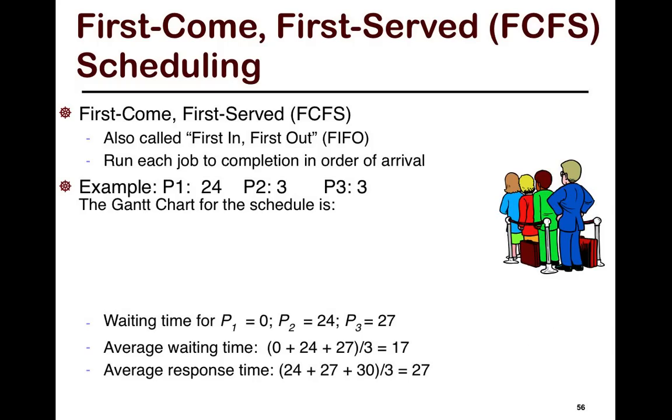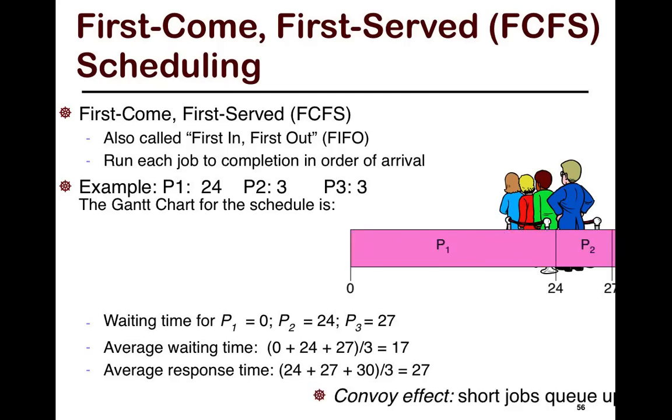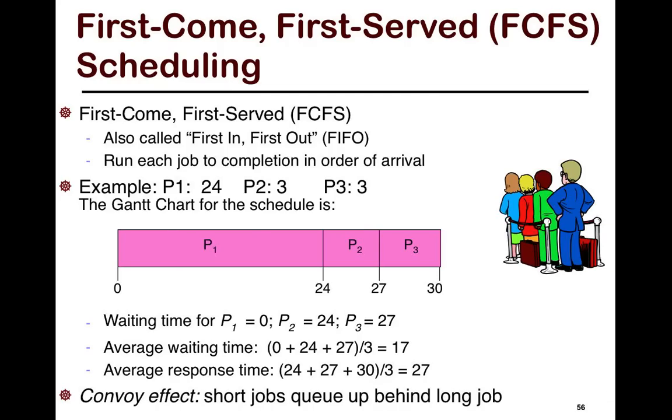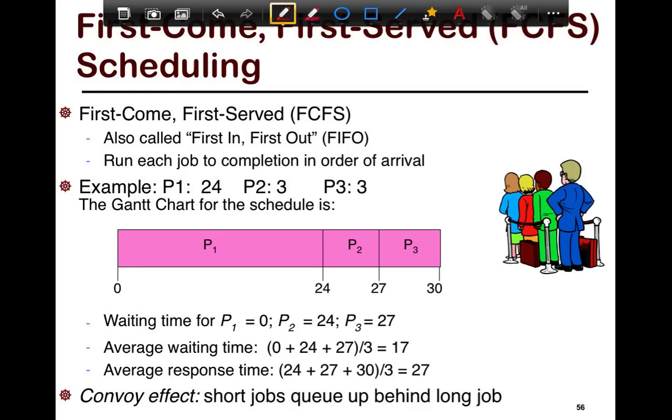For example, I've shown you three processes here: P1, P2, P3. P1 runs for 24 seconds, P2 runs for 3 seconds, and P3 runs for 3 seconds. The Gantt chart, which is essentially—I'll show you—Gantt charts are used to study or understand scheduling algorithms and the trade-offs. Essentially in Gantt charts, time flows left to right.